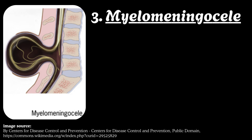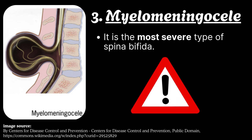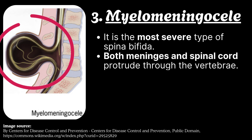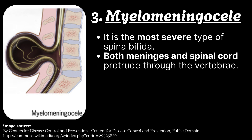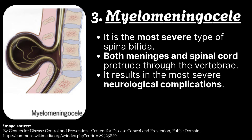Number 3: Myelomeningocele. It is the most severe type of spina bifida. In this type, both the meninges and spinal cord protrude through the vertebrae, resulting in the most severe neurological complications.